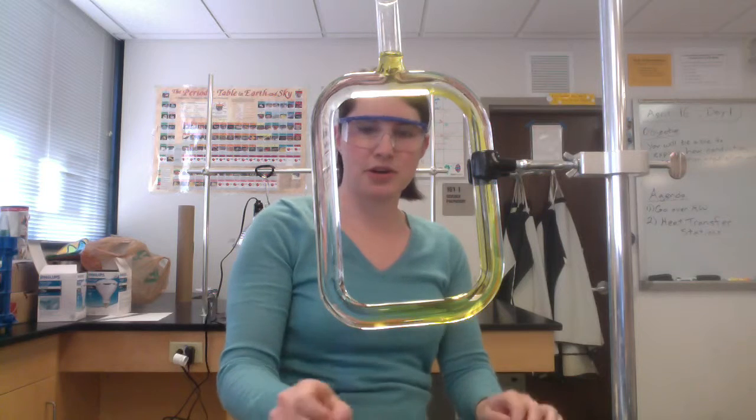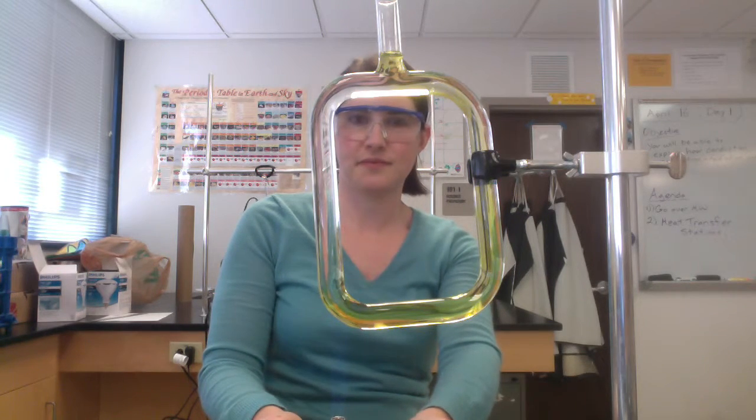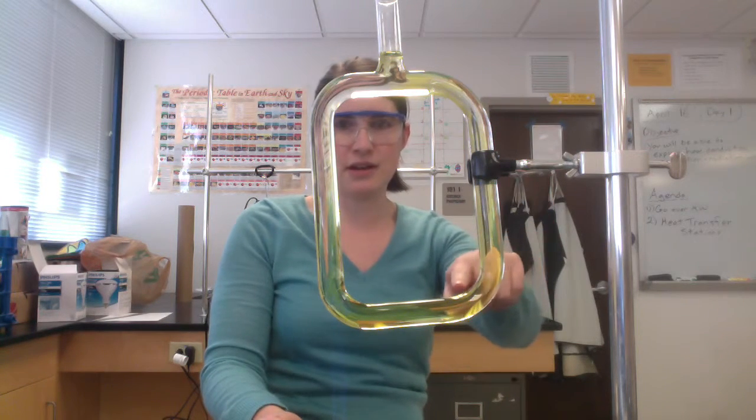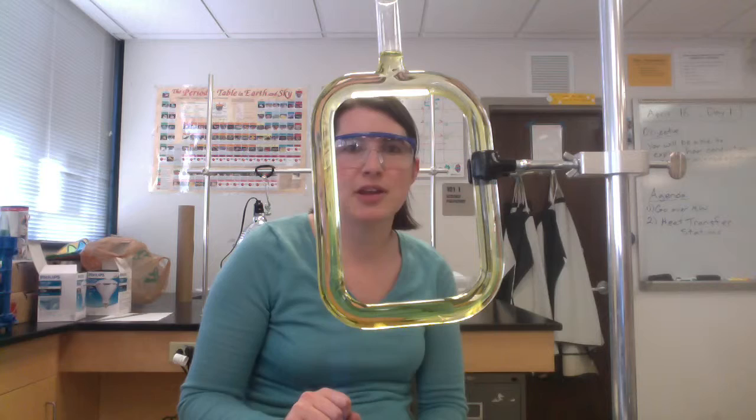So here's where the burner is. And you'll notice that the dye is going down, around, and back up again. So think about why this is happening. Where is the water least dense, and where is it most dense?